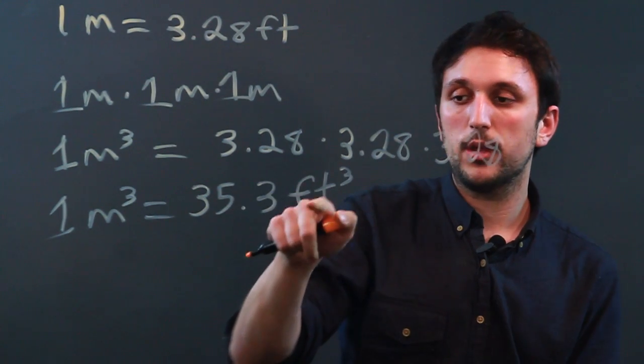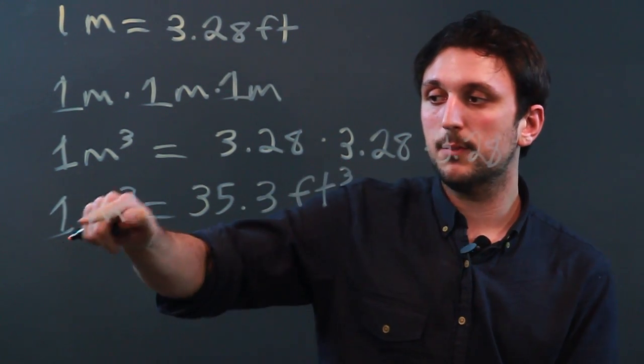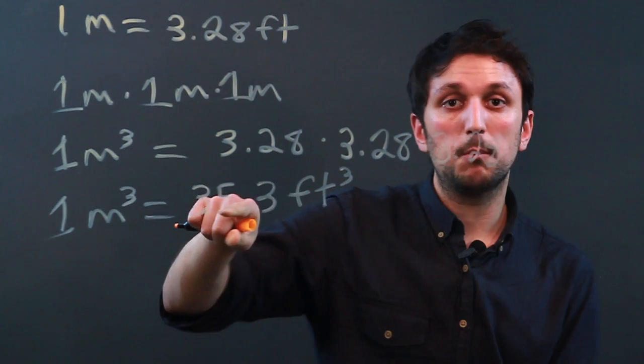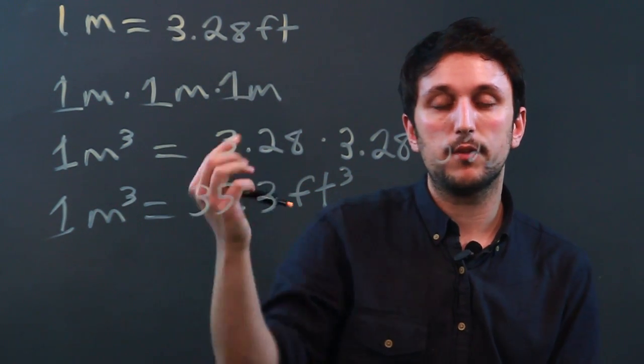So 35.3 cubic feet is the same as one metric cube or cubic meter, and if that's the case, then what we know is that the multiple is always going to be 35.3.